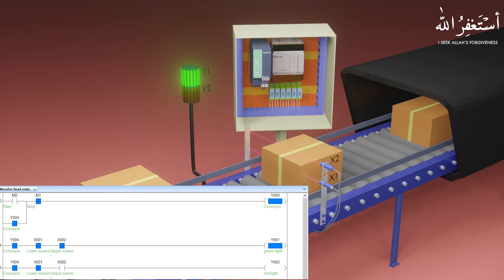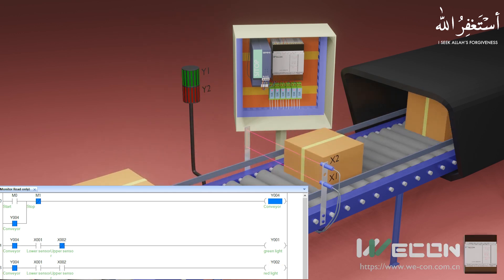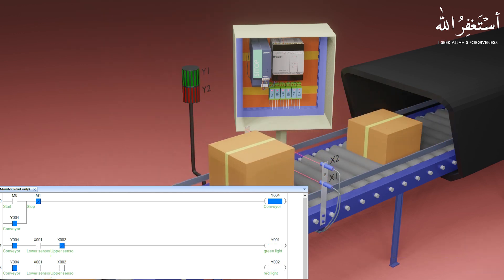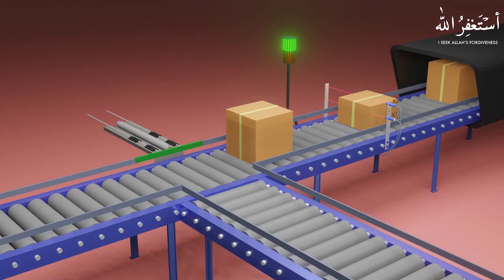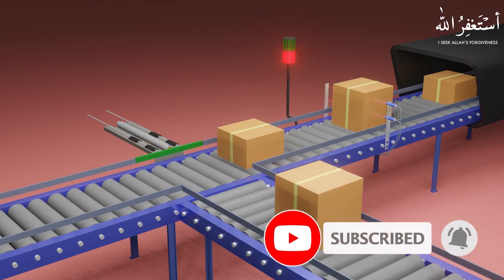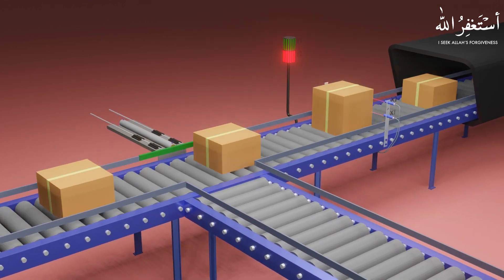So this is how we can detect the height of the boxes. In the second part, we will learn how to divert boxes on different conveyors depending upon different box sizes. So stay connected and subscribe to this channel for the next part of this video tutorial.